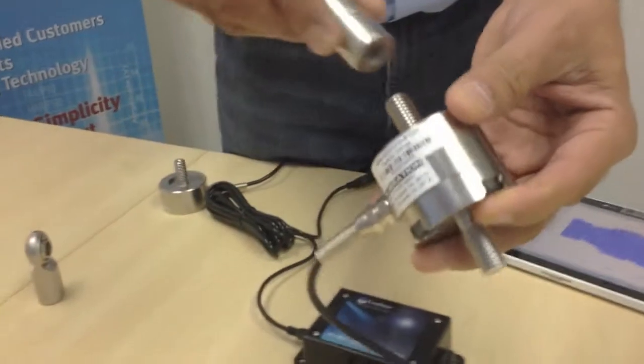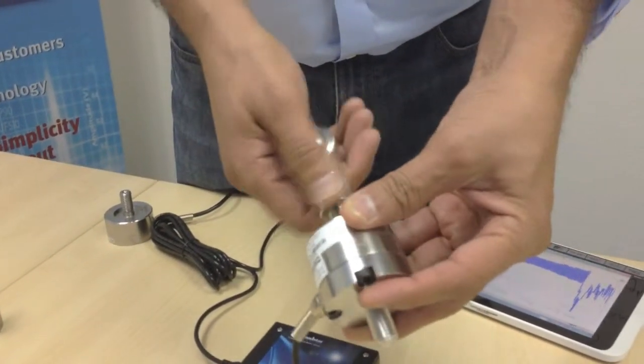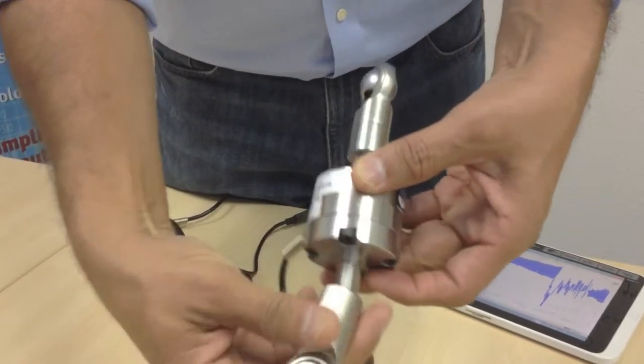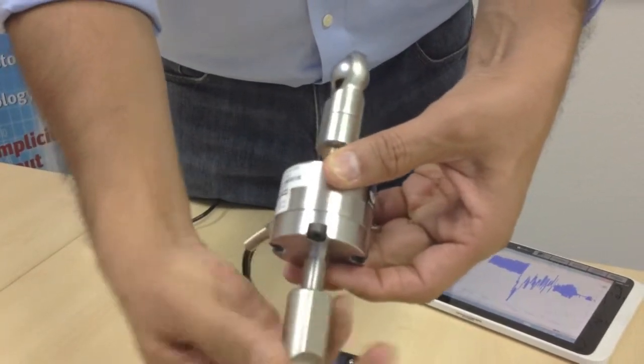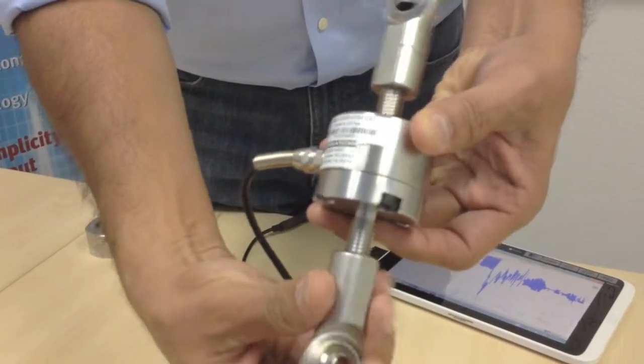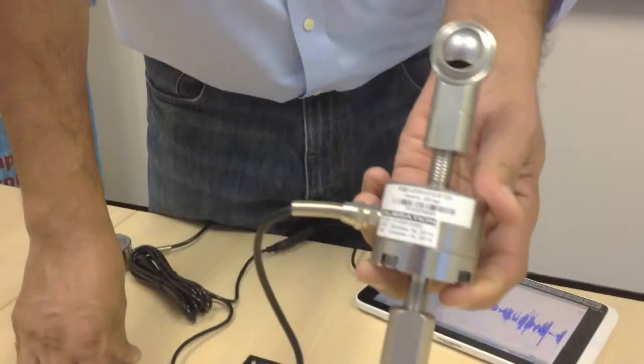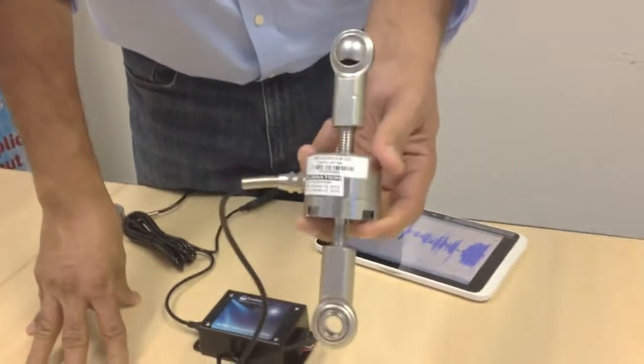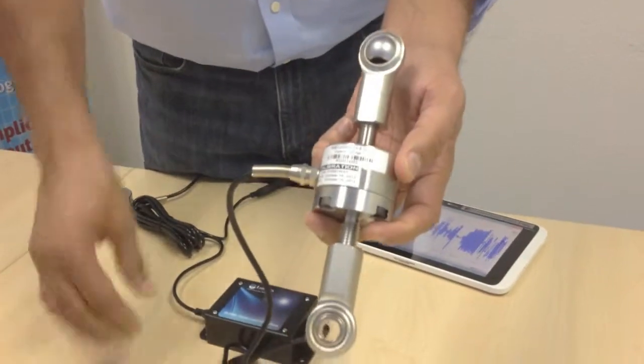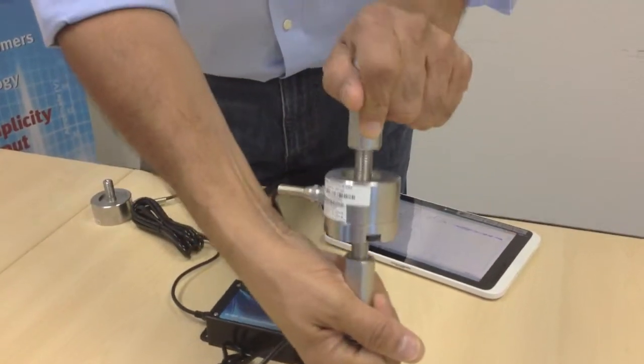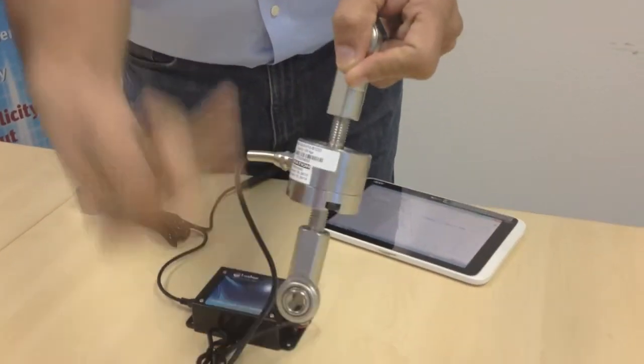Or you can attach these rod ends and then you can use this to do applications such as wire harness testing, cable pulling, you can make your own universal testing machine and so forth. So it's a very versatile sensor. You can do not only compression but also tension forces on it using this setup.